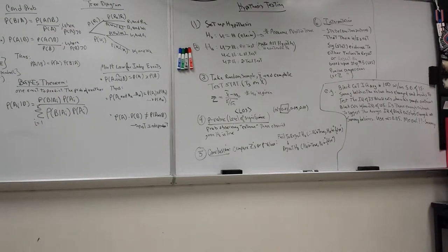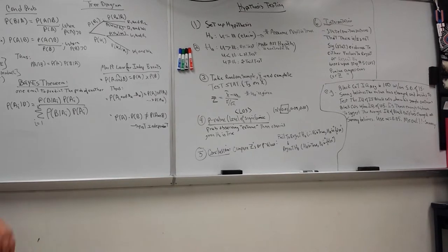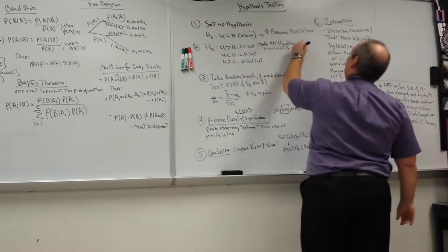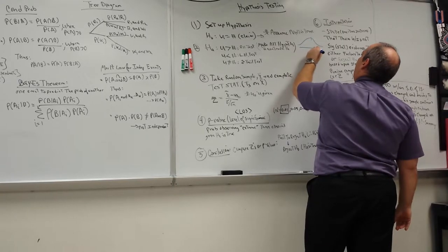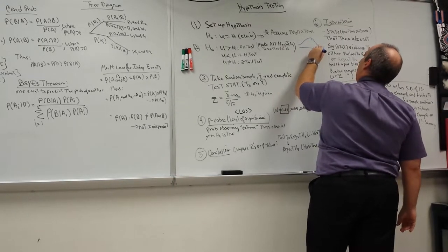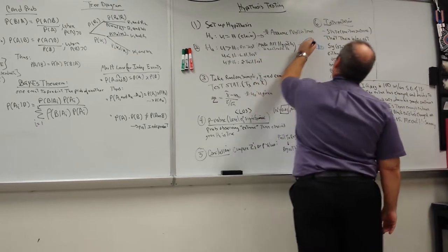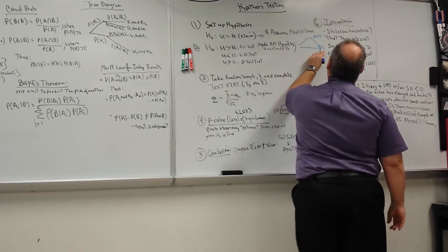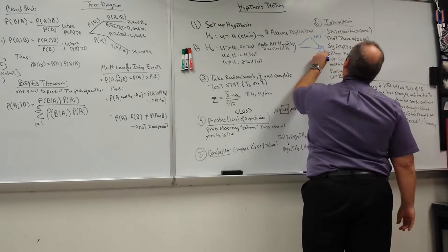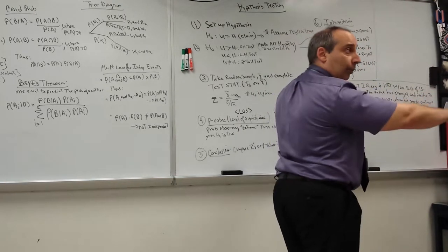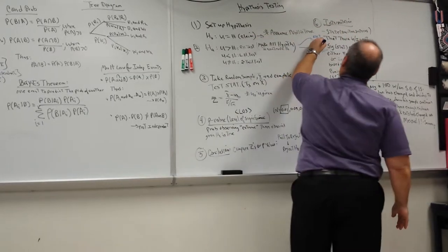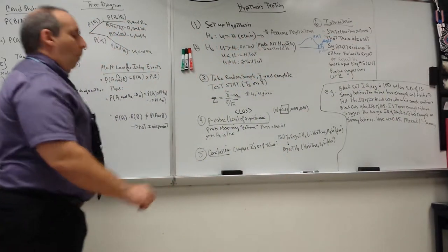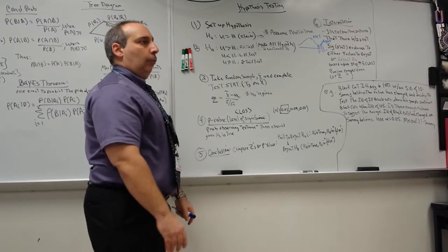If the alternative hypothesis says mu is greater than the claimed value, we do a right-hand test. We cut it off at a certain level. All of the unshaded area is true, and if we find a p-value or a z-score greater than what we account for, then we know that if it falls in the rejection zone, we reject the null hypothesis.